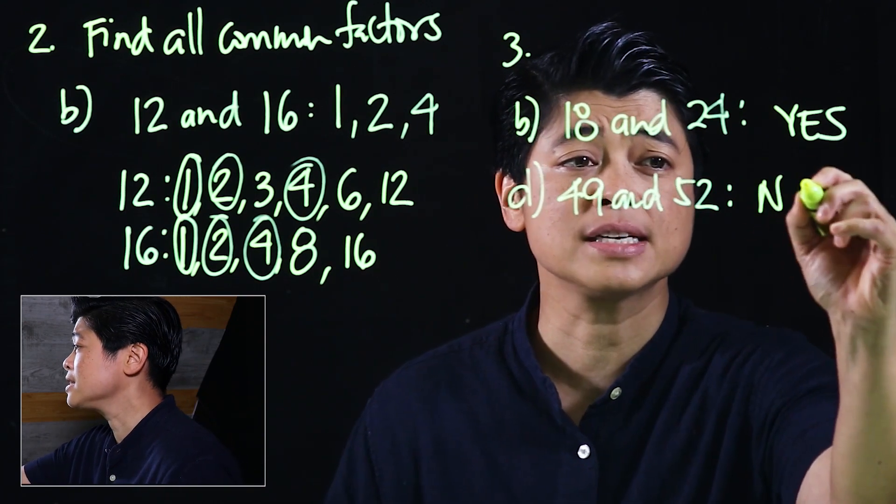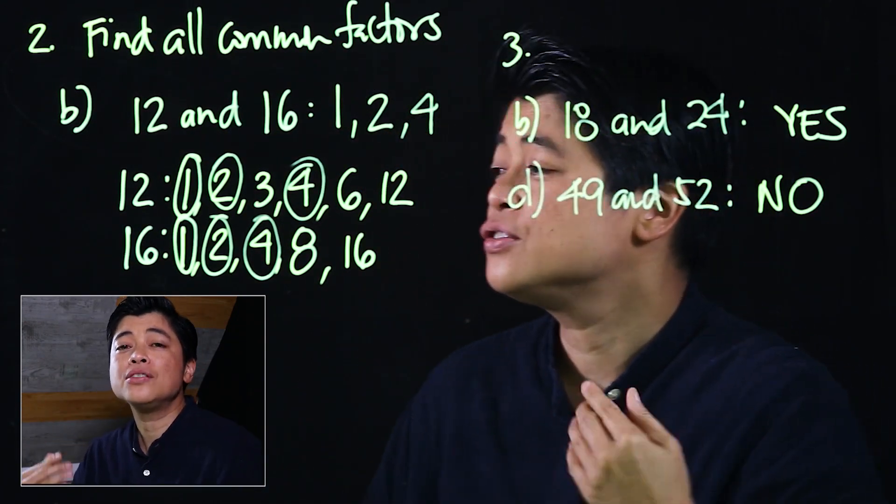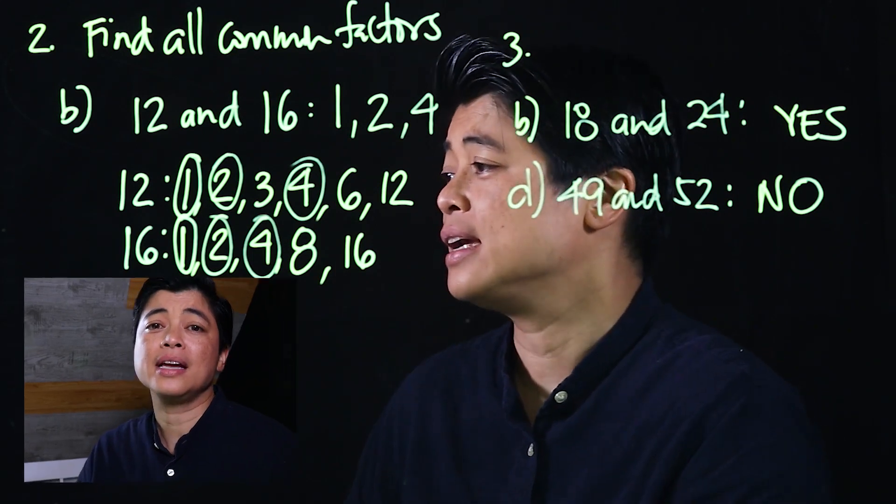The logic behind factors is that these are the numbers that can divide a given number. The smallest factor of any number is 1, and the largest factor of any number is itself. That concludes Lesson 1 of Chapter 2. See you in the next lesson.